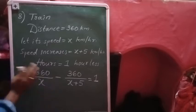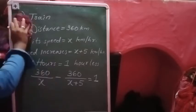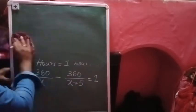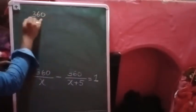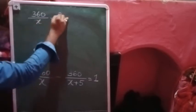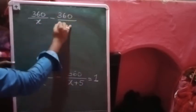This is the equation we have to solve by factorization. After cross multiplying, let's see if we can solve it. What is our equation? This is 360 by x minus 360 by x plus five, which is equals to one.